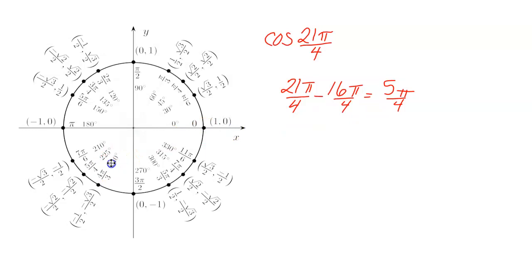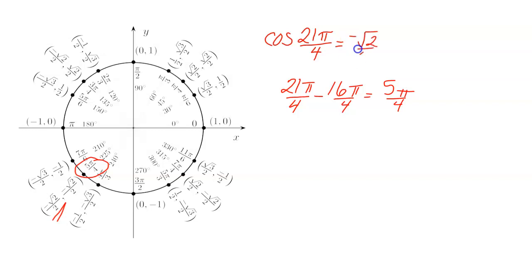And 5π over 4 is right here in quadrant 3. The cosine of an angle is the x-coordinate, so the cosine of 21π over 4 is negative square root of 2 over 2, because it is coterminal with 5π over 4 — they have the same x-coordinate, and cosine is the x-value. Hope that helps.